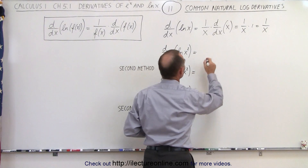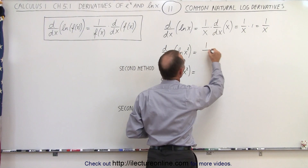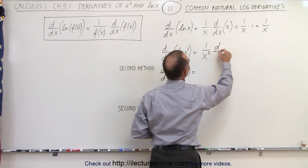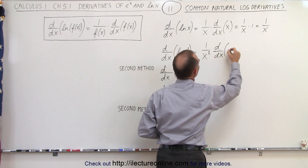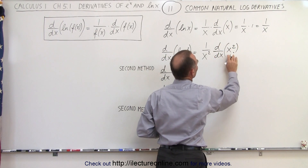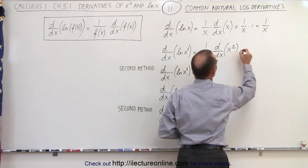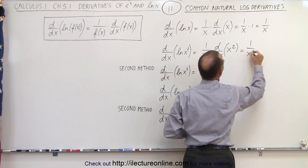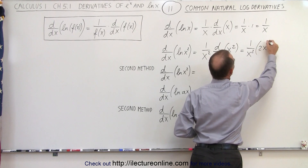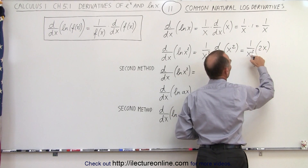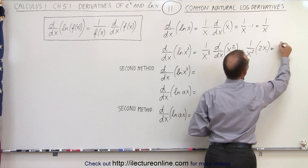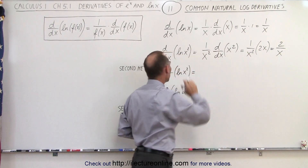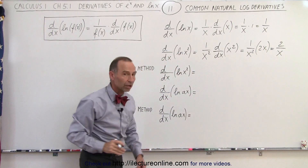We do the same thing. We write this as 1 over x squared — that's the function of x — times the derivative of x squared, which is 2x. So this becomes 1 over x squared times 2x. The x cancels out one of those, leaving us with 2 divided by x. That's the derivative of the natural log of x squared.